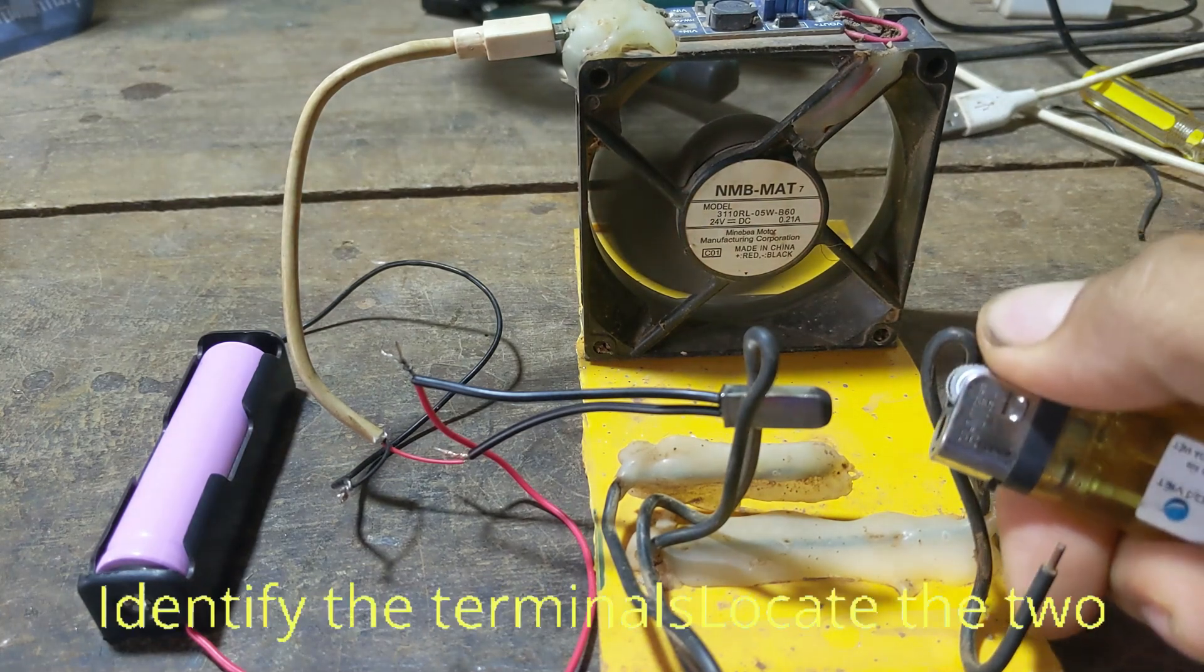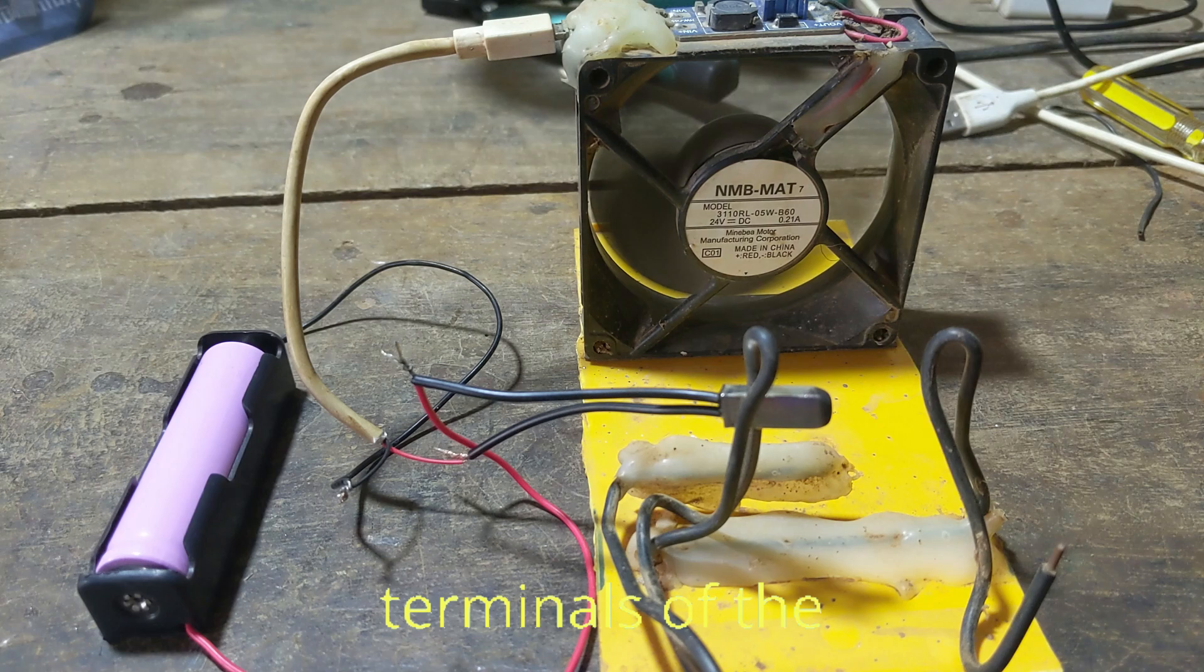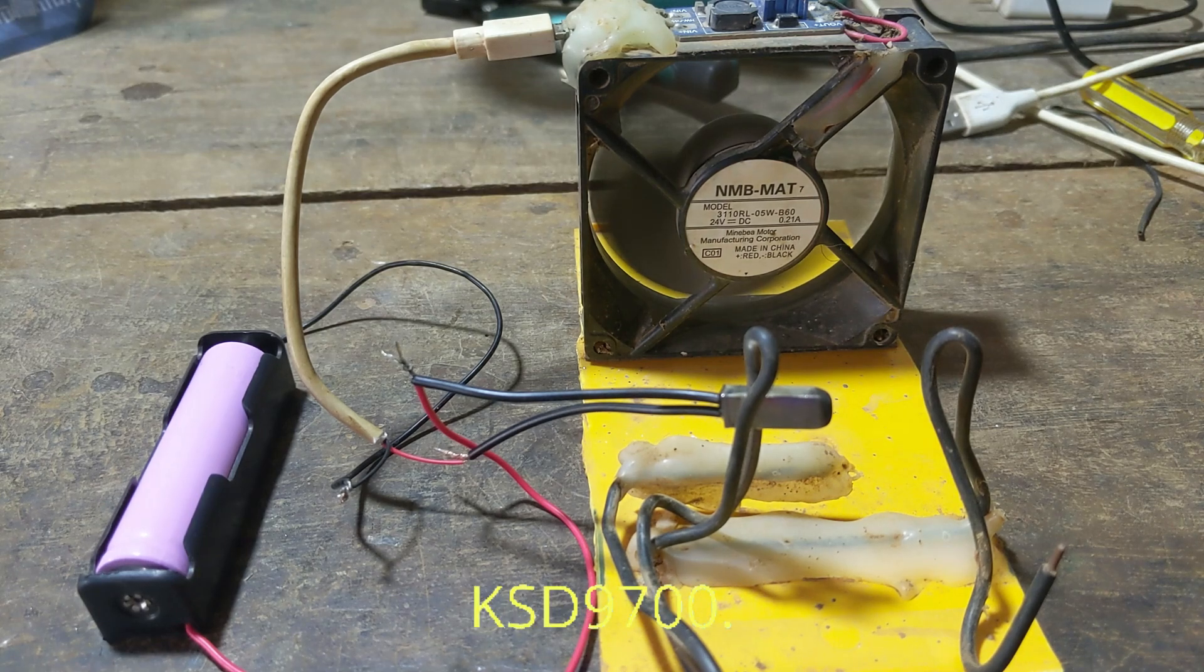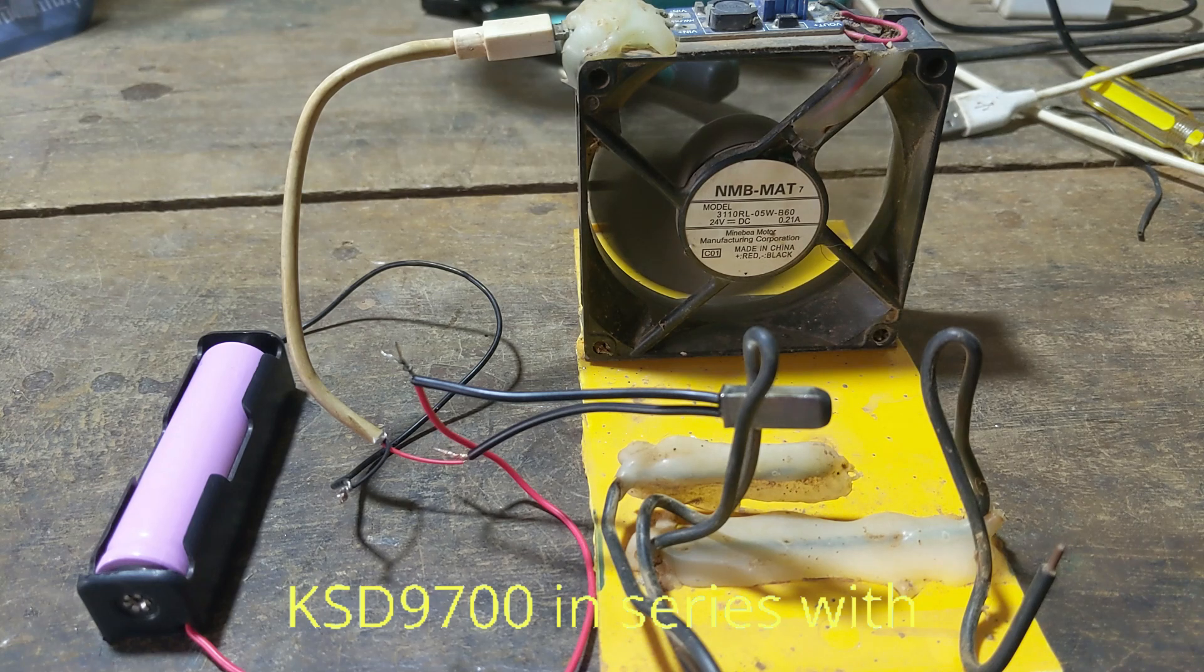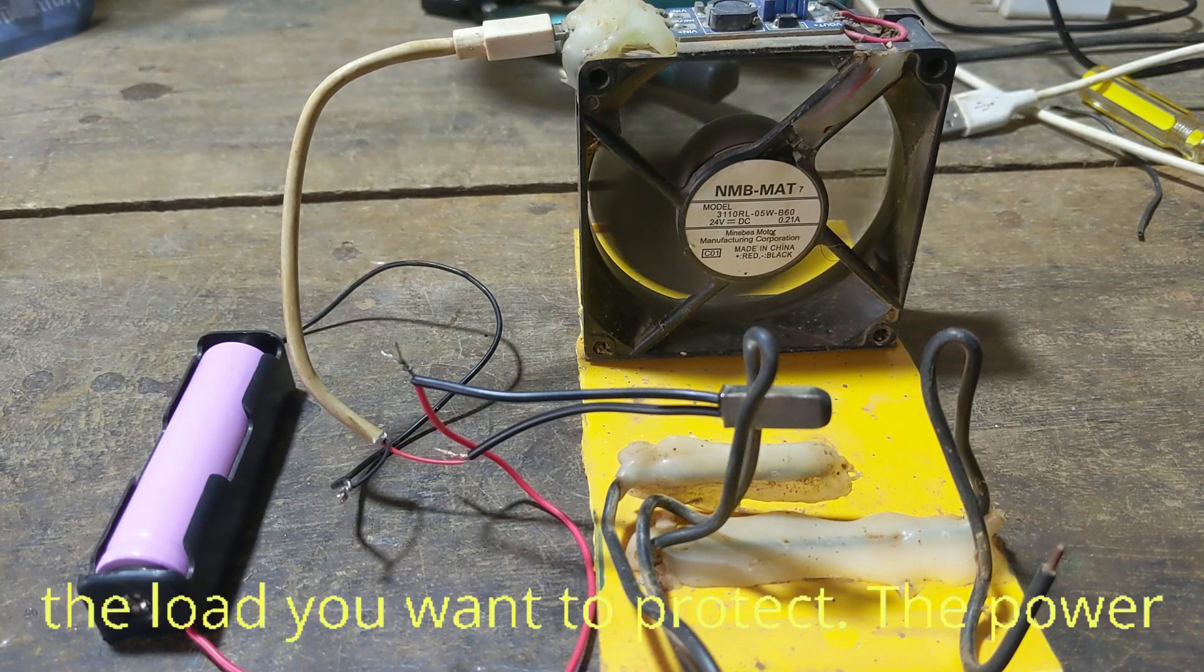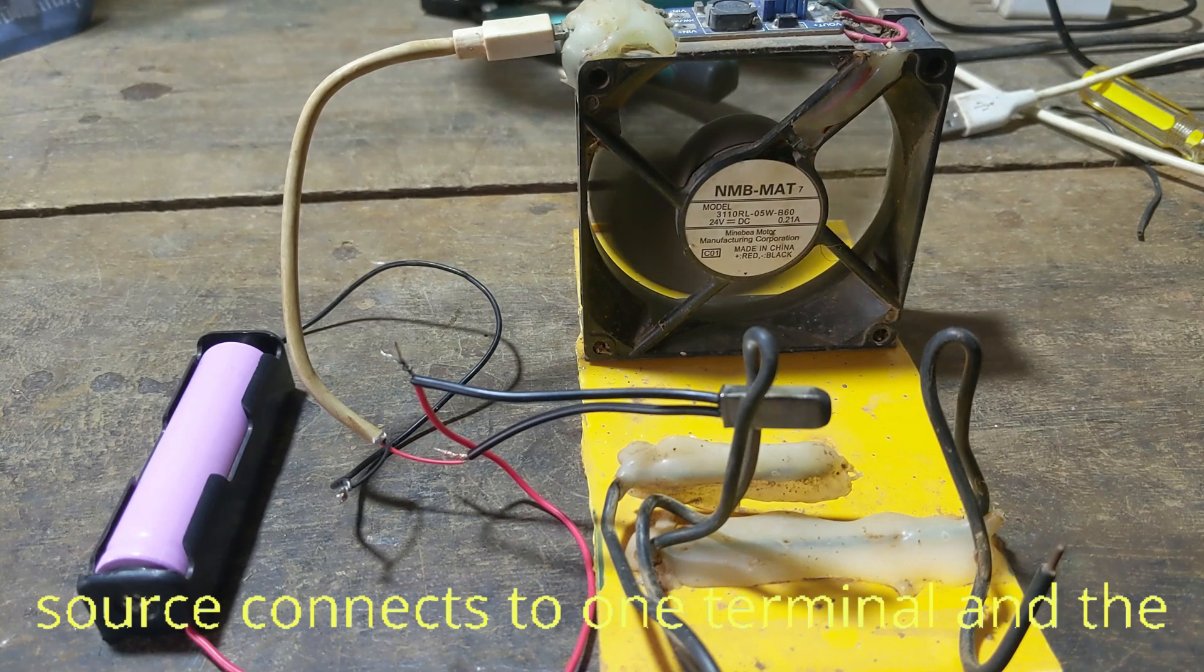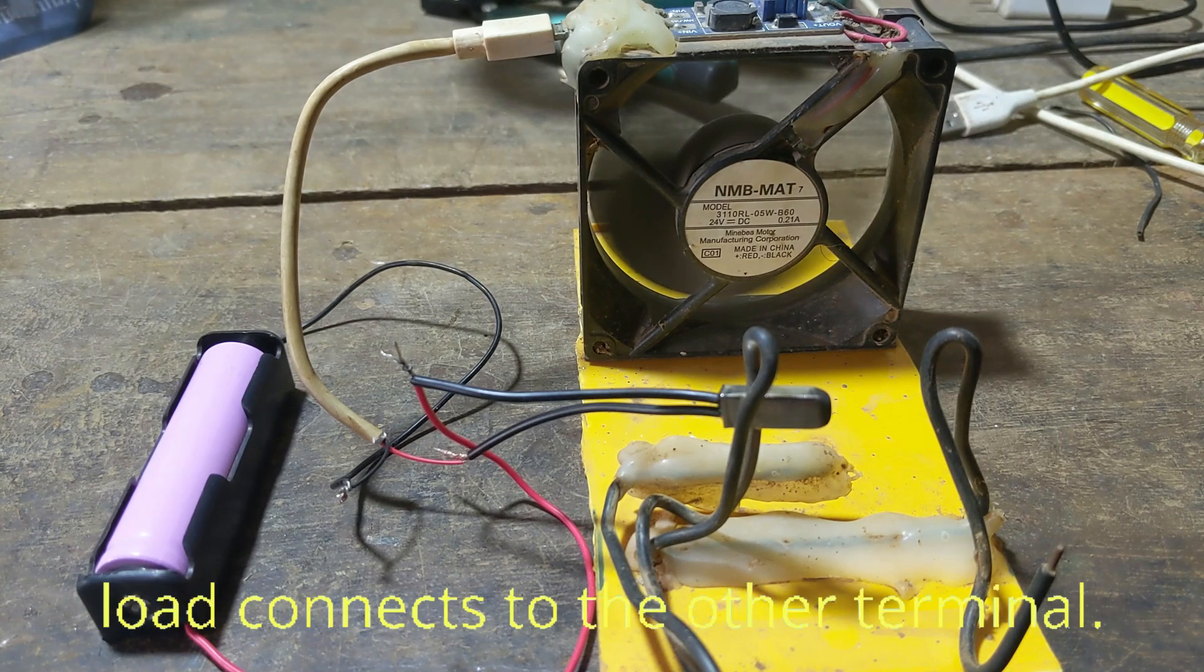Identify the terminals: locate the two terminals of the KSD 9700. Connect in series: wire the KSD 9700 in series with the load you want to protect. The power source connects to one terminal, and the load connects to the other terminal.